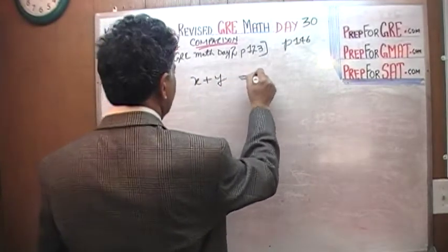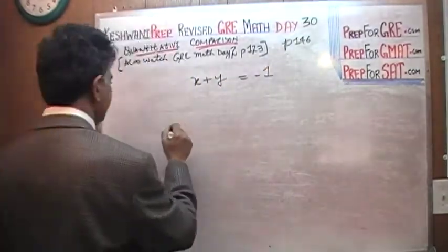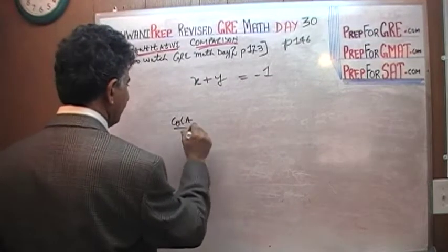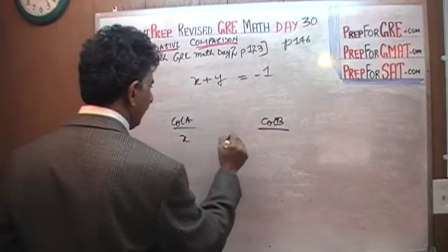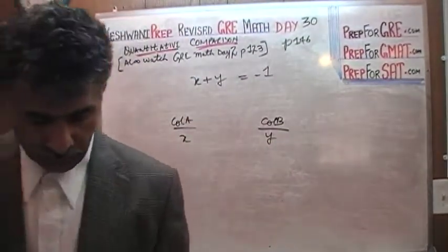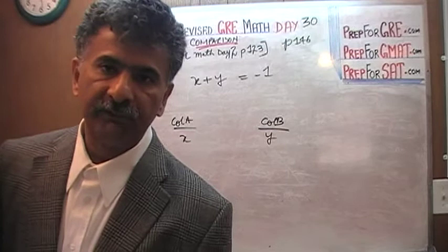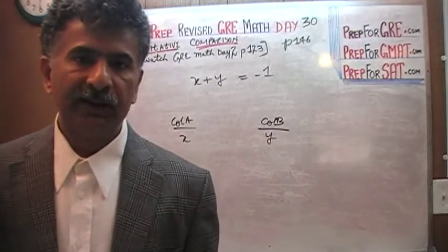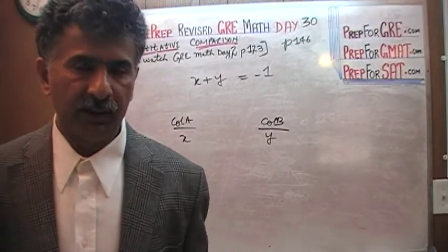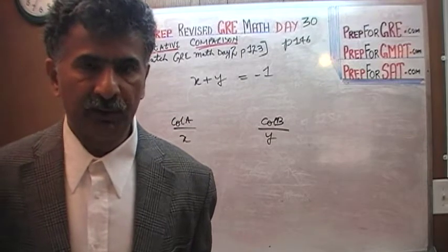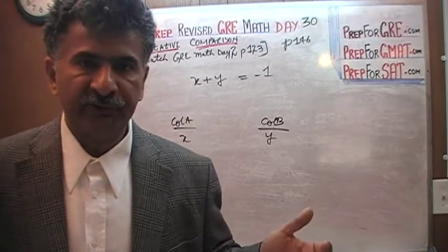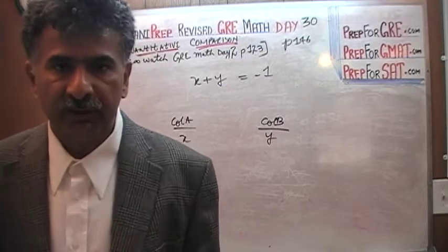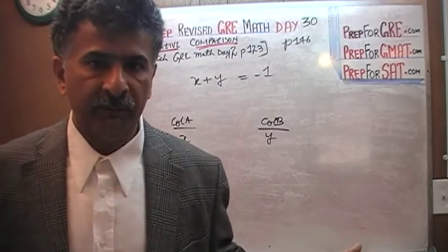Here it is. We are told that x plus y equals negative 1 and we are simply asked to compare x versus y. Is there anything else? Is there anything else we are told about x and y? In other words, are there any constraints on x and y? Are there any limitations on this x and y? Are we told that x has to be positive or y has to be negative or x has to be less than y or y has to be more than x? We are told nothing here. There are no constraints on x and y.